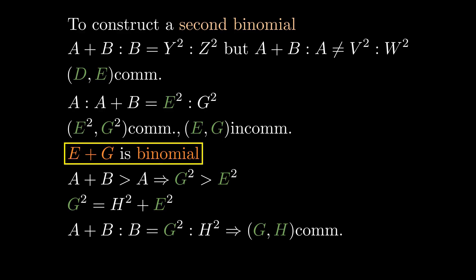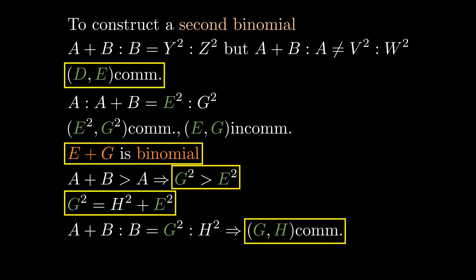Overall, G plus E, G being greater than E, is binomial whose difference of squares, H squared, is commensurable in length with G, and E is commensurable with the given rational D. This makes G plus E a second binomial by definition.